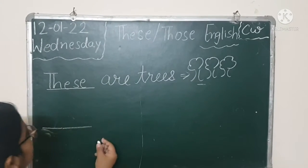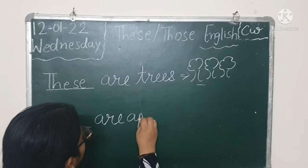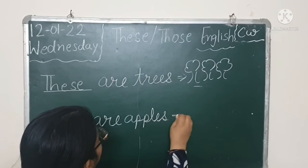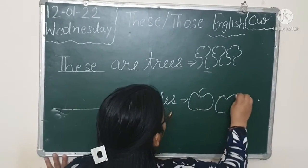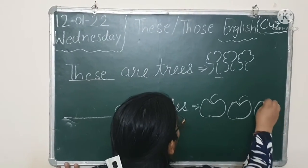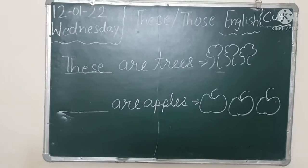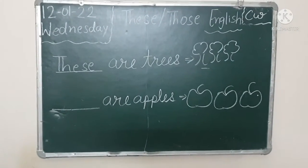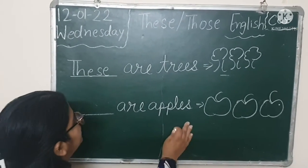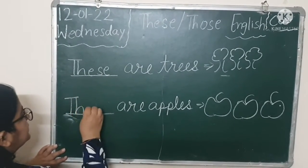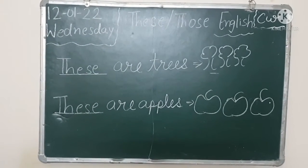Another example: dash are apples. Apples are near to us, so we write here 'these'. These are apples.